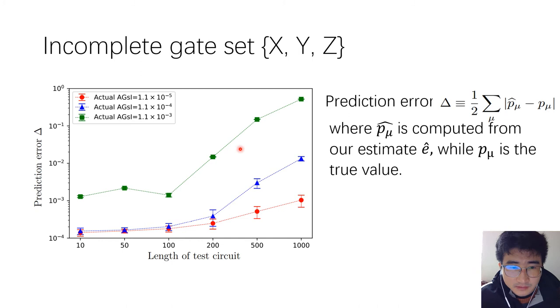These inaccessible noise parameters play no role. This figure shows the prediction errors for three sets of noise parameters with different noise strengths. The prediction error is defined as the trace distance between our estimate of the probabilities and the true values. For these three sets of noise parameters, the prediction errors are small.